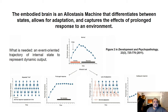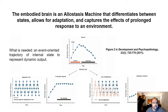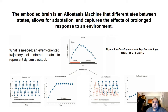What is needed to understand the embodied brain is an allostasis machine as an event-oriented trajectory of internal state to represent dynamic output. You can see different patterns of stimulus or environmental challenge: repeated hits, prolonged response, lack of adaptation by the internal model, and adequate response. The embodied brain is an allostasis machine that differentiates between states, allows for adaptation, and captures the effects of prolonged response to an environment — it's a very flexible model.